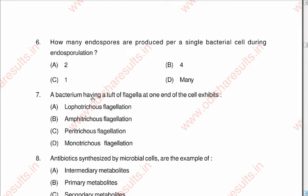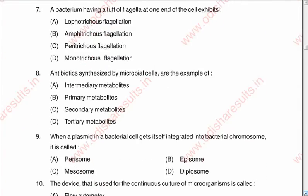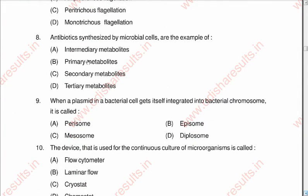Question seven: A bacterium having a tuft of flagella at one end of the cell exhibits A: lophotrichous flagellation, B: amphitrichous, C: peritrichous, D: monotrichous. The correct answer is A: lophotrichous flagellation.